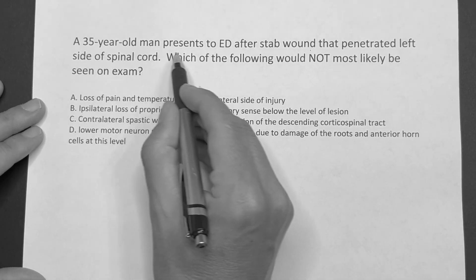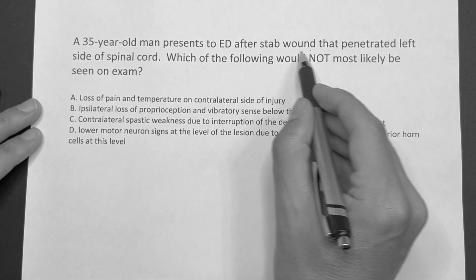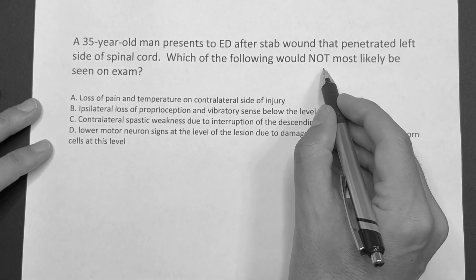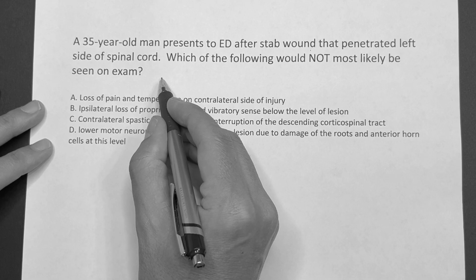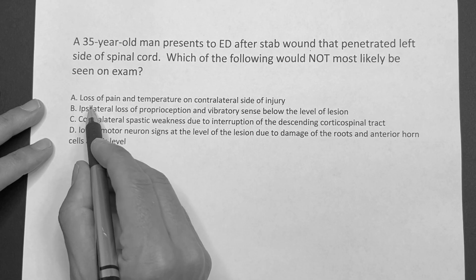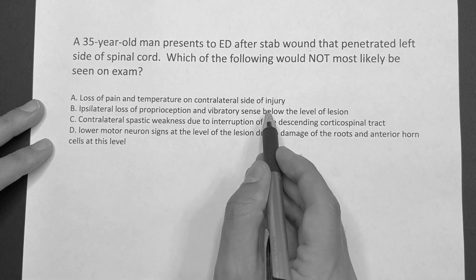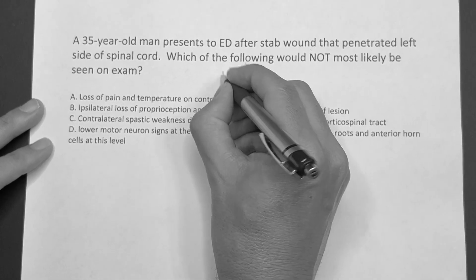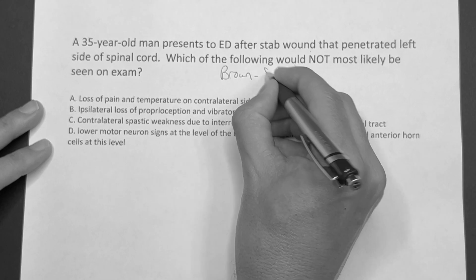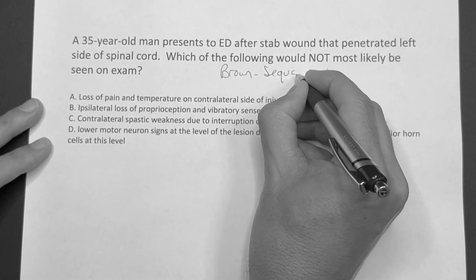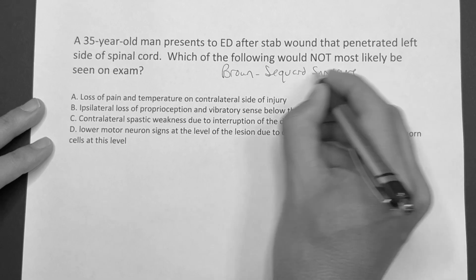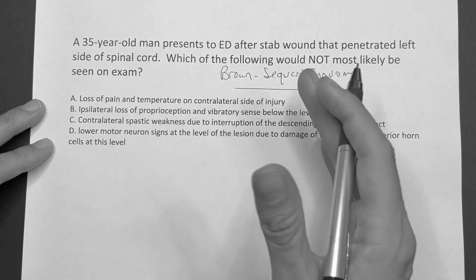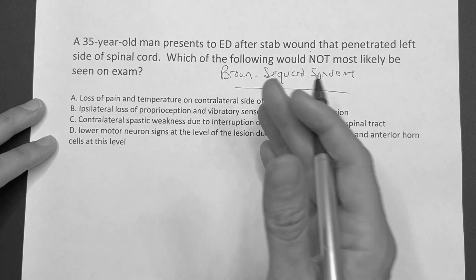The question reads: a 35-year-old man presents to the emergency room after a stab wound that penetrated the left side of his spinal cord. Which of the following would not most likely be seen on exam? When you see the answer choice about loss of pain and temperature on the contralateral side, you immediately think: this is Brown-Séquard syndrome — a neurological condition that happens to the spinal cord after some type of injury.